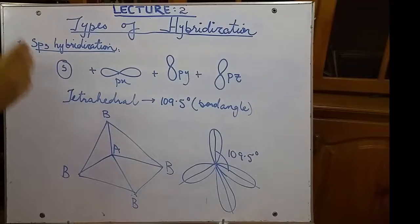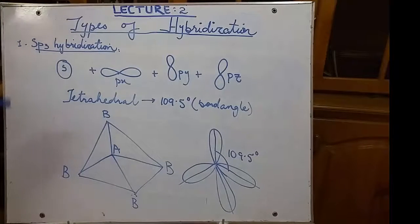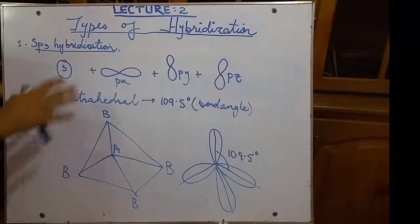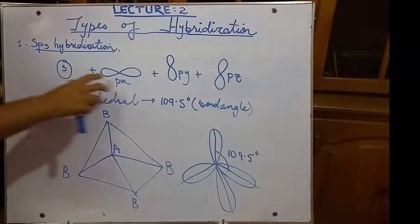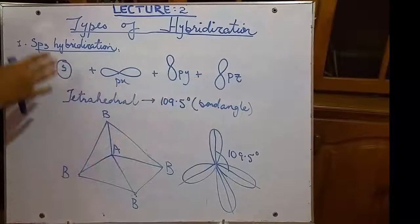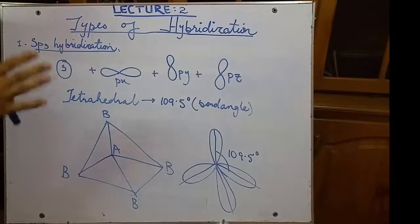Here we will be discussing about the types of hybridization. Number 1 is sp3 hybridization. What is sp3 hybridization? As the name suggests, 1s and 3p orbitals combine to form sp3 hybrid orbital.